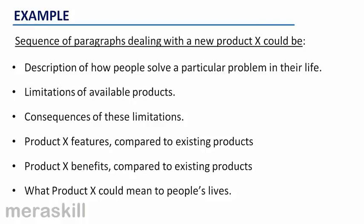I just made an example for you to look at — this is a sequence of paragraphs. Let's say I am dealing with a new product X which needs to be launched in the app. How will I tell this to people? I am trying to make a sequence and unfold a story. I tell them about the current scenario — how people solve a particular problem without this product. Then I take them to the limitations of available products. This new product is a mineral water I want to launch in a market where there is no concept of mineral water.